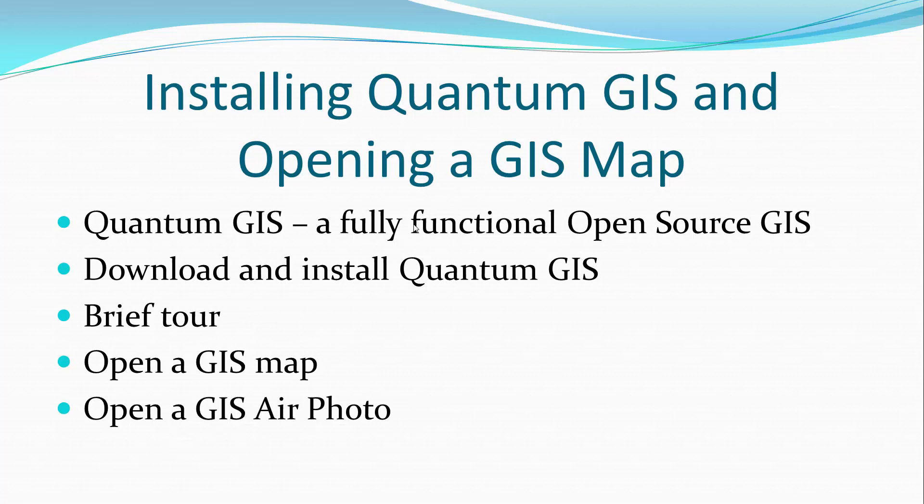Today we're going to install a geographical information system called QuantumGIS and we're going to use it to open a GIS map. QuantumGIS is a fully functional open source geographical information system — just as functional as many of the larger commercial geographical information systems out there. These days it's also very user friendly and very stable. It's just fantastic, and this is coming from someone with a background of using commercial geographical information systems.